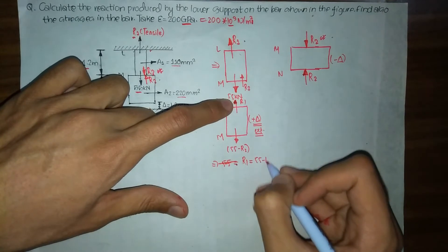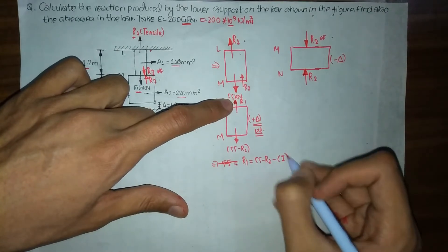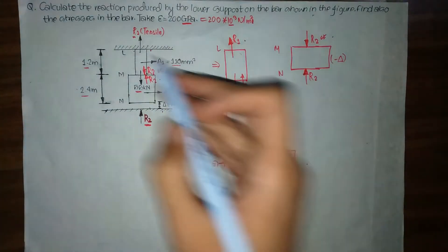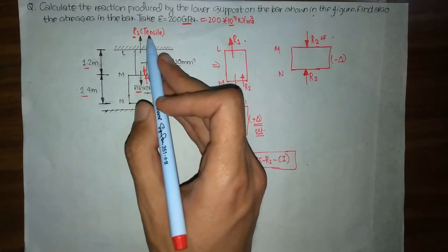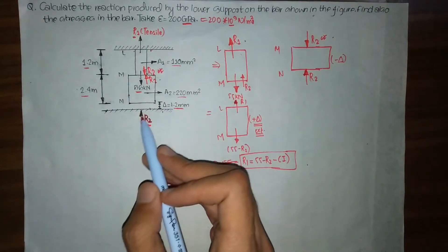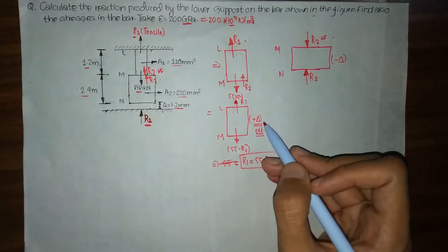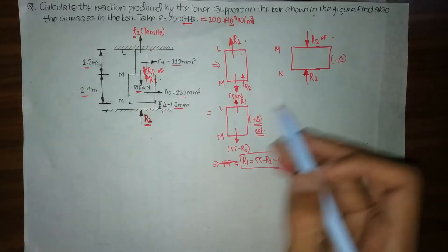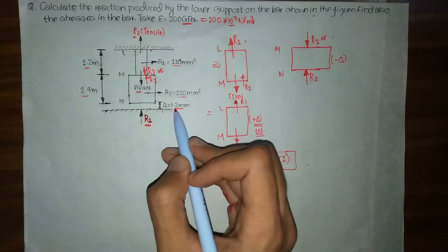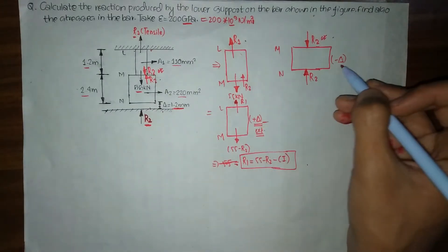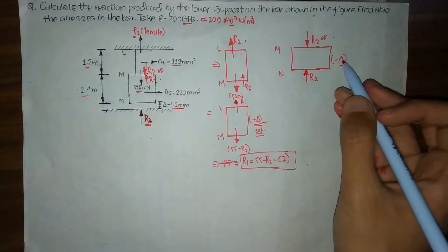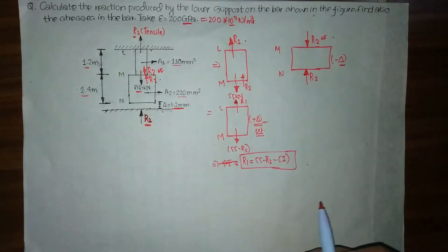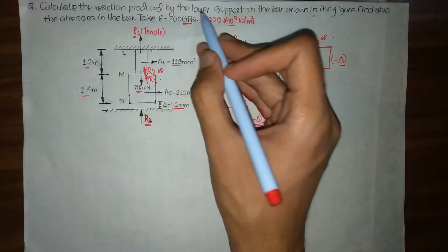Our equation 1 is: R1 equals 55 minus R2. Due to the upper bar we have tensile reaction, and due to the lower bar we have compressive reaction. Because of this positive and negative deflection — extension and contraction — we have a total deflection of 1.2 mm.